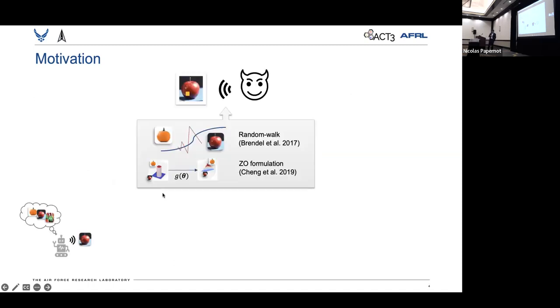These hard-label attacks started as a random walk on the decision boundary in 2017, and it wasn't until 2019 that by casting as a zeroth-order optimization problem, it was possible to achieve theoretically justified convergence guarantees on the very same hard-label attacks.